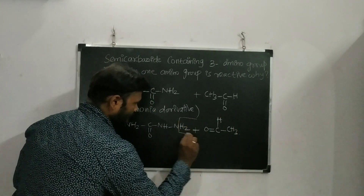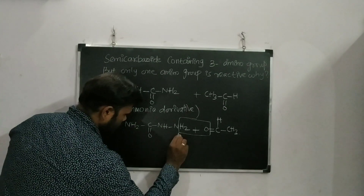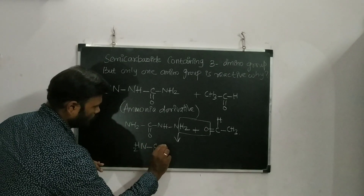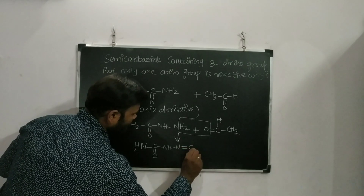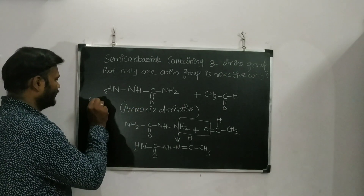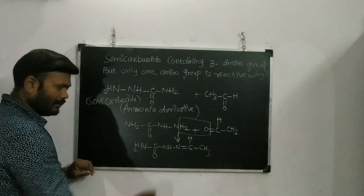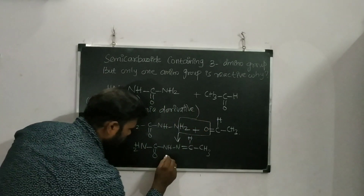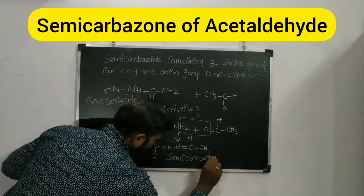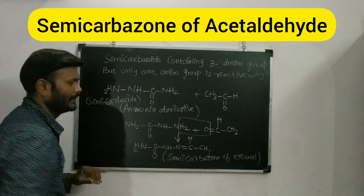Whenever an ammonia derivative reacts with a carbonyl compound, there is a simple trick — not a mechanism, just a trick — to find the product. The product I get is NH₂–C(=O)–NH–N=CH–CH₃. This product is called the semicarbazone of acetaldehyde — the acetaldehyde semicarbazone.